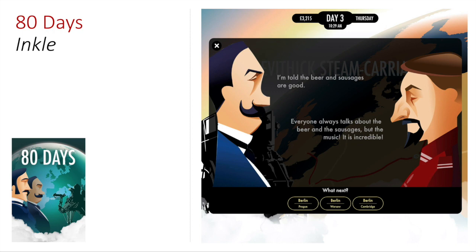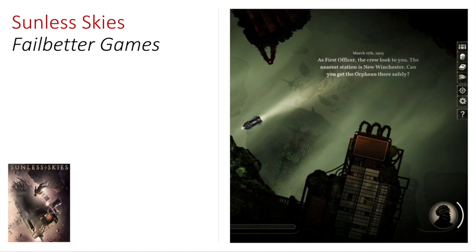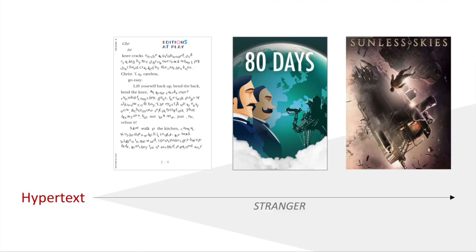In 80 Days, you collect items and gather money, and the amount of money and items you have determines the sorts of routes available to you. And even further, in Sunless Skies by Failbetter Games, this is augmented by an entire combat system as you patrol the reach in your steam locomotive, taking on pirates and augmenting your steam engine. What we're basically seeing is that as hypertext becomes stranger and experiments with new mechanics, it becomes more game-like and moves further away from core literary hypertext.